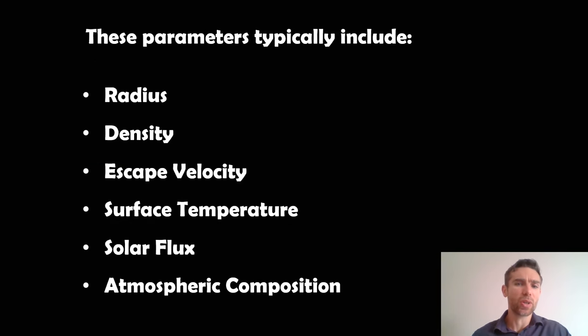So some of those key parameters we can use could be radius, density, escape velocity, surface temperature, solar flux, atmospheric composition. We can also use things like the mass. We've got the radius, the density. There are some extra ones we can use. And we can't always measure all of those, so it might be that we just use one or two. There's a simplified version where you can just use the radius and the stellar flux to then get an ESI or an Earth similarity index value. But you can use all these sort of parameters here.